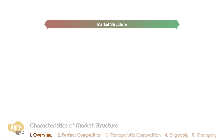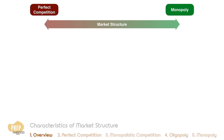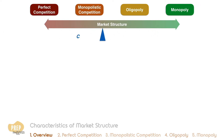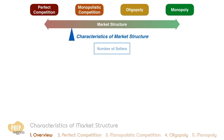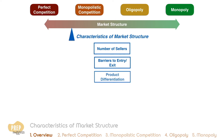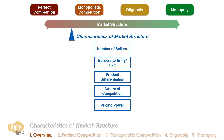Market structure is a spectrum. At one extreme is perfect competition, in which many firms produce identical products and competition forces them all to sell at the market price. At the other extreme we have monopoly, where only one firm is producing the product. In between we have monopolistic competition, where there are many sellers and differentiated products, and oligopoly, where a few firms compete in a variety of ways. Where an industry falls along this spectrum can be determined by examining five characteristics: the number of sellers and their relative sizes, barriers to entry or exit from the industry, the degree to which firms differentiate their products, the nature of competition, and the pricing power of the firms. Let's examine the characteristics of each of these market structures and the implications for firm strategy.